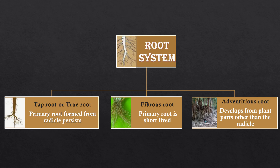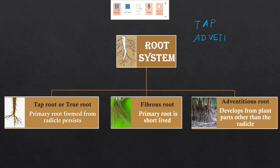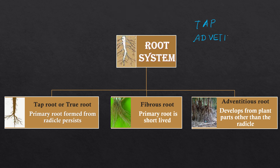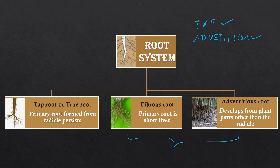Now we will come to the classification of root system. Root system is broadly classified into two parts. Generally you have heard of the tap root system and the adventitious root system. In many books, three types are listed: tap root, fibrous root, and adventitious root — though in many books fibrous and adventitious are clubbed together.